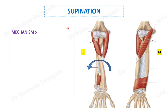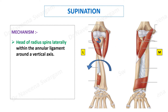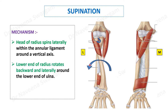Mechanism of action: supination is bringing the pronated forearm back to the anatomical position, where the head of the radius spins laterally within the annular ligament around a vertical axis. Meanwhile, the lower end of the radius rotates backwards and laterally around the lower end of the ulna, which is also slightly pushed forwards and medially, so that the interosseous membrane gets despiralized.